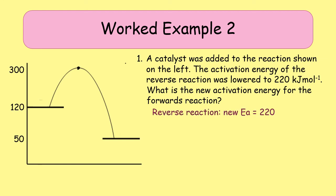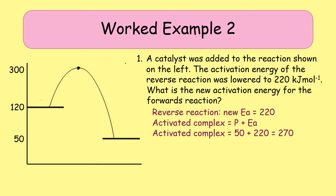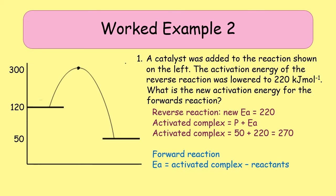For the reverse reaction, the new activation energy is 220. We find the activated complex by rearranging the equation — activated complex equals products plus activation energy — so that's 50 plus 220, giving a new activated complex energy of 270, down from 300. For the forward reaction, activation energy equals activated complex minus reactants: 270 minus 120 gives 150 kilojoules per mole, or positive 150 kilojoules per mole.